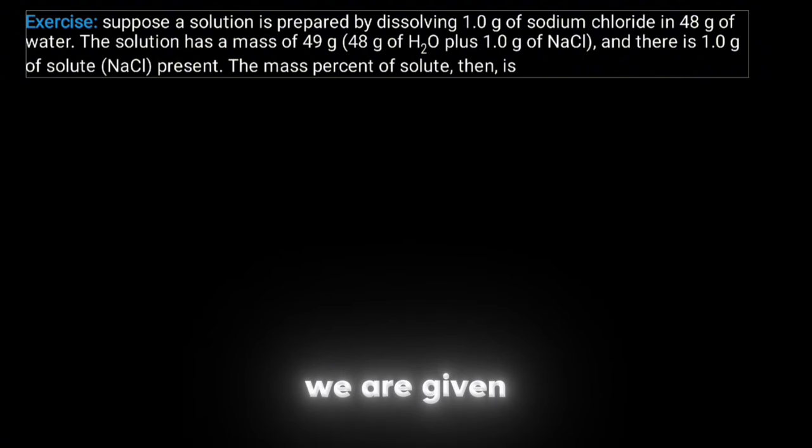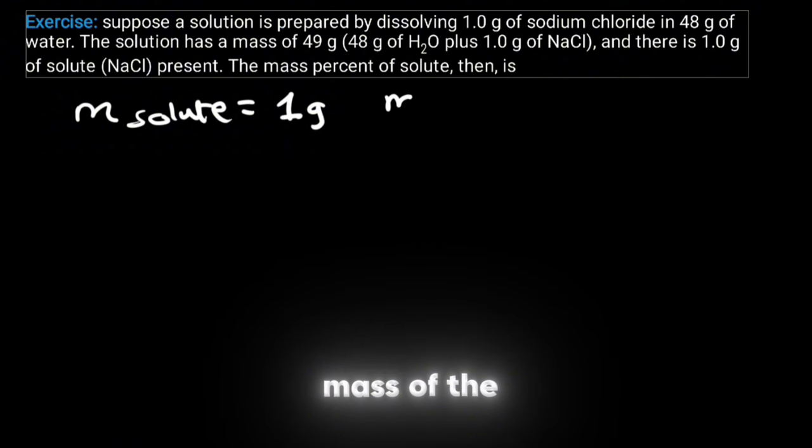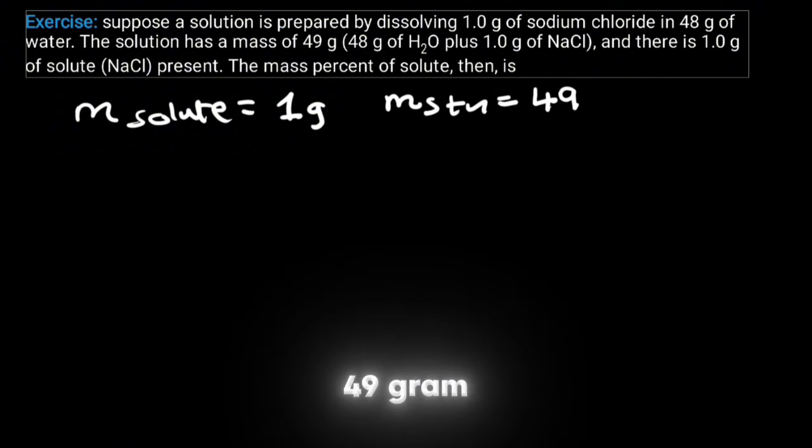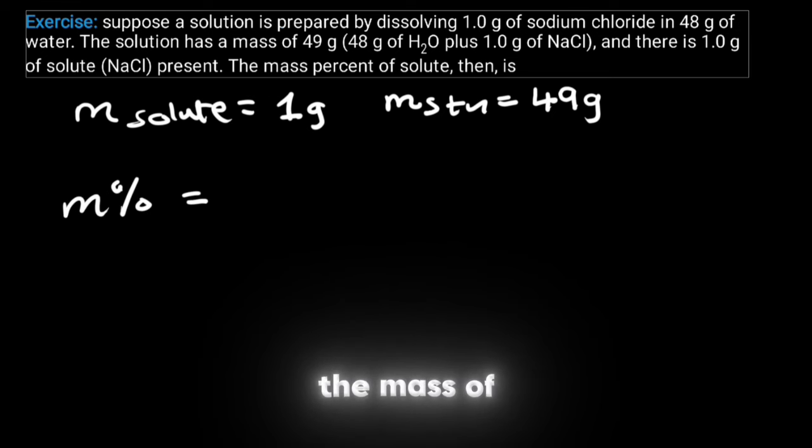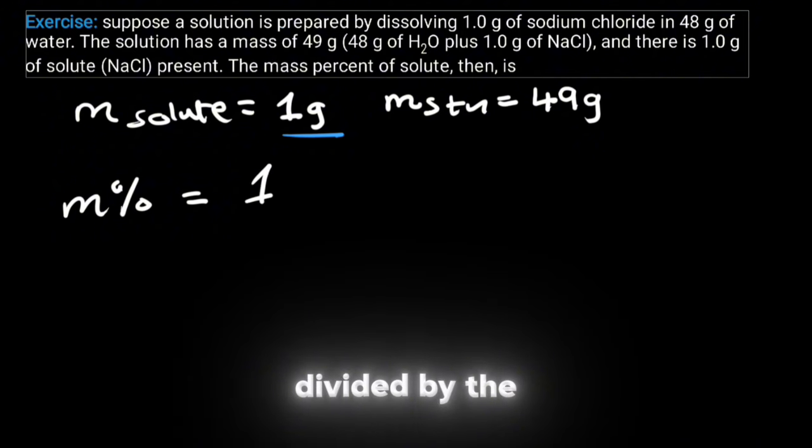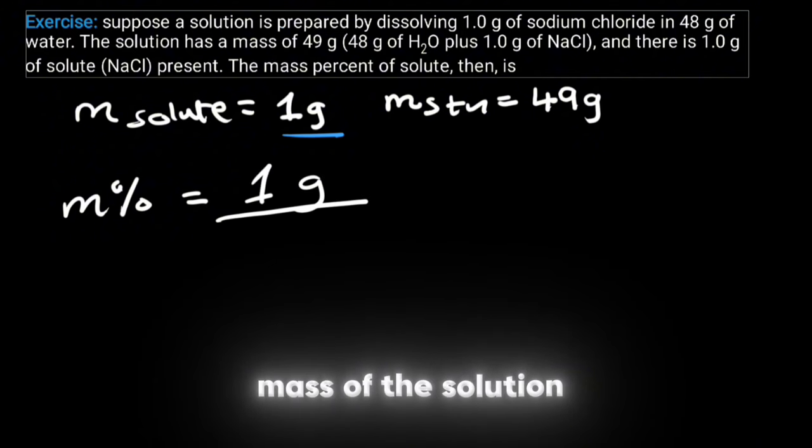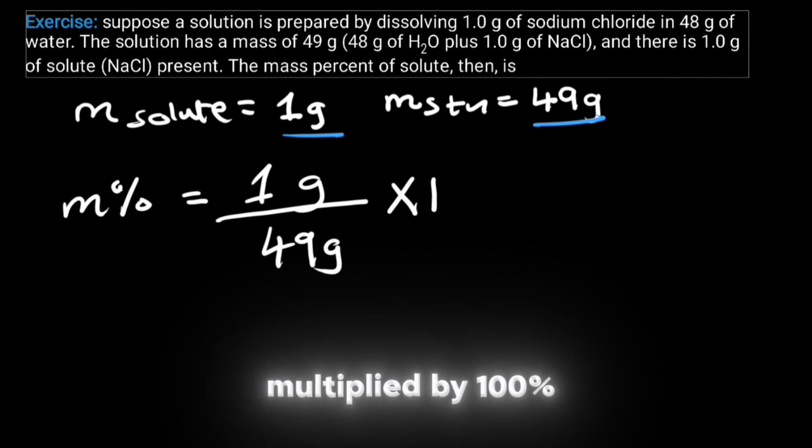So we are given here the mass of the solute as 1 gram. And we are also given the mass of the solution as 49 grams. And we know that the mass percent is equal to the mass of the solute, which is this here, 1 gram, divided by the mass of the solution, which is this here, 49 grams, multiplied by 100%.